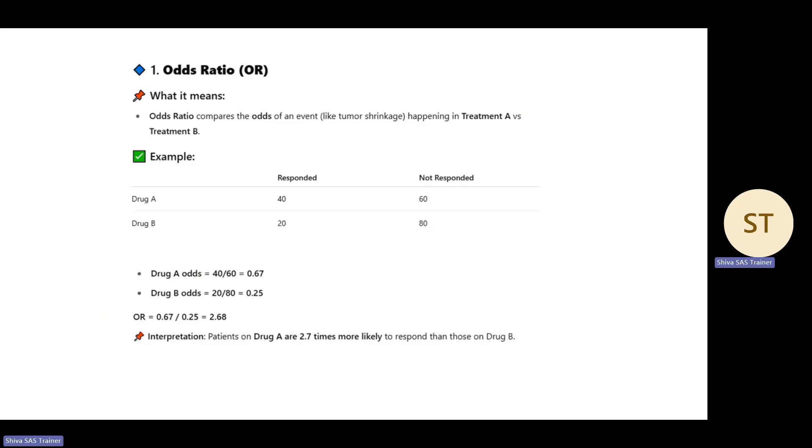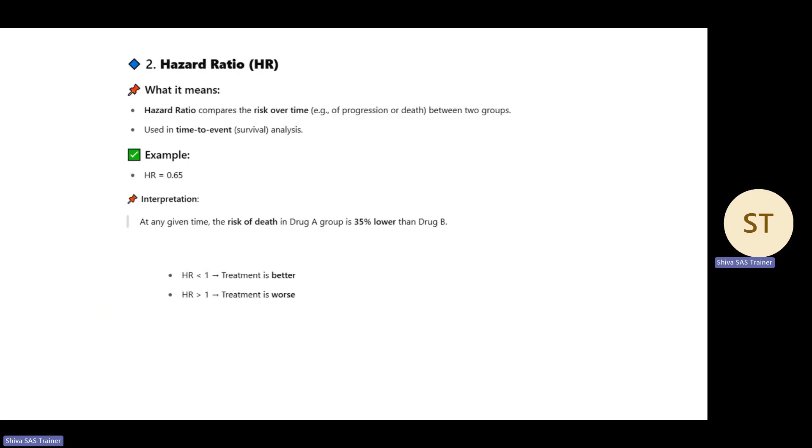What is hazard ratio? Hazard ratio is risk over time, comparing how much risk between two drugs, which drug has more risk and which has less risk. It's used for time-to-event survival analysis. For example, if hazard ratio is 0.65, by using PHREG or some other procedure, you're getting a value.